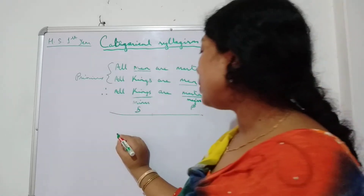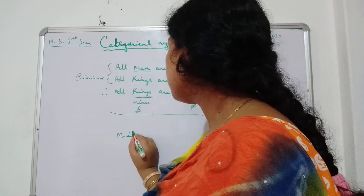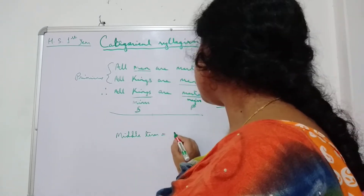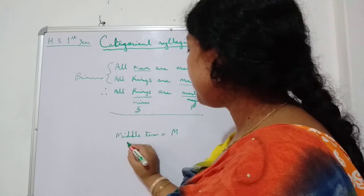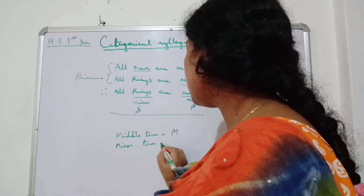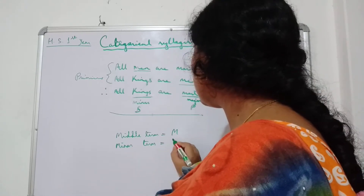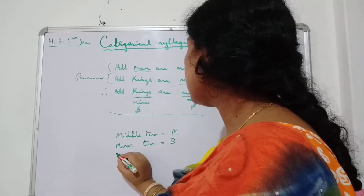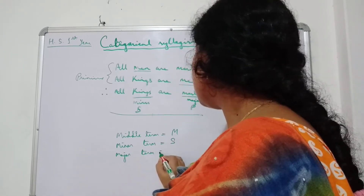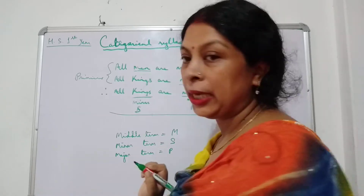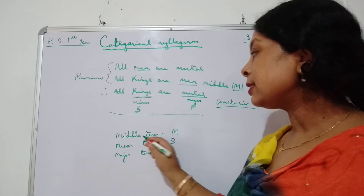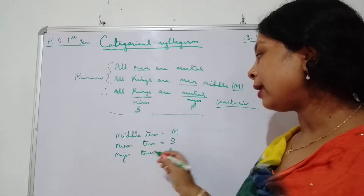So to summarize: middle term is equal to M, minor term is equal to S, and major term is equal to P. These are the letters that represent middle term, minor term, and major term.